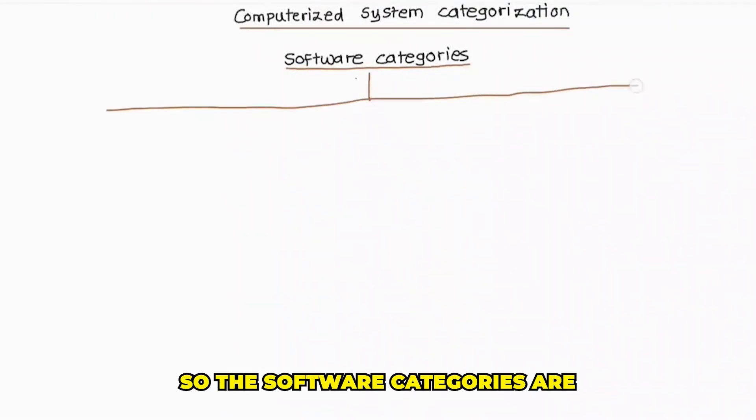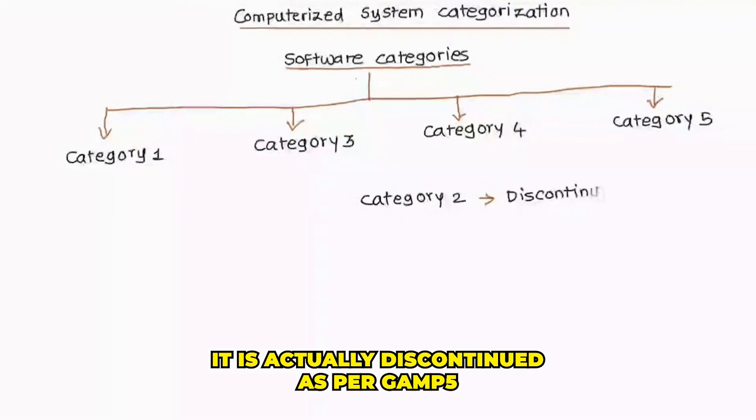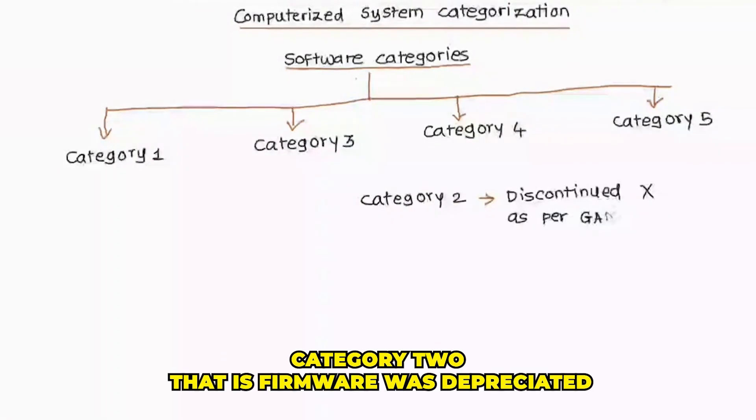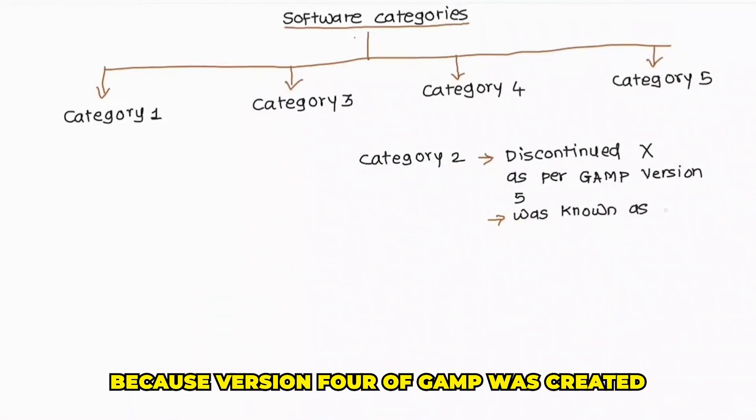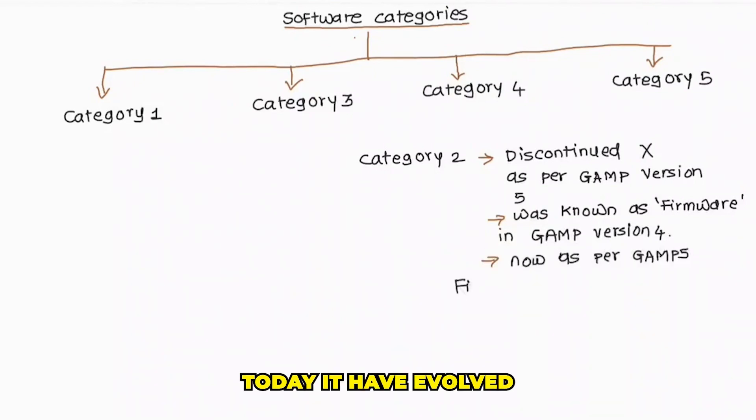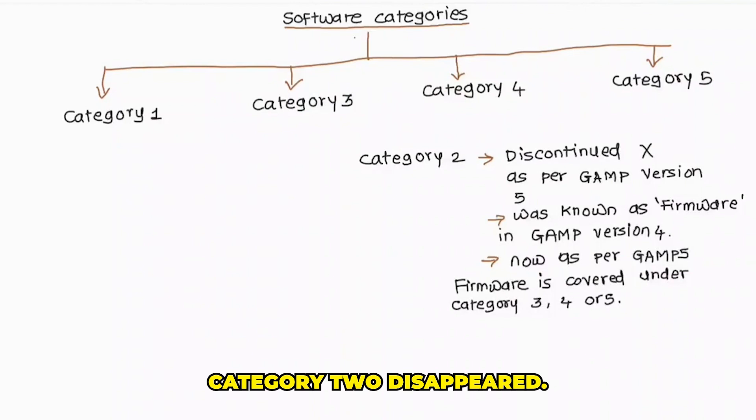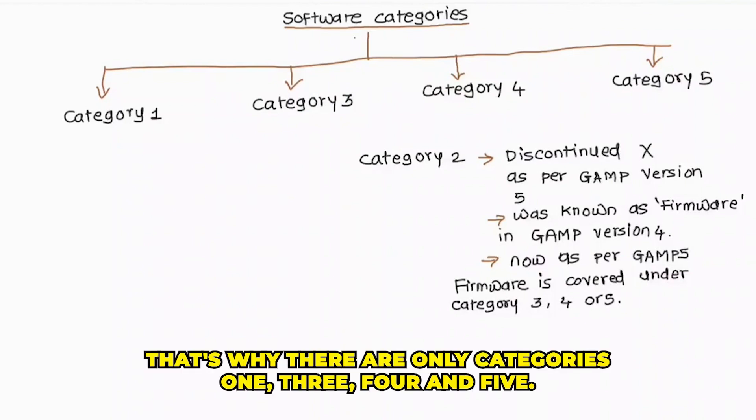The software categories are category 1, category 3, category 4, and category 5. No, I did not miss category 2. It is actually discontinued as per GAMP 5. Category 2, that is firmware, was deprecated because when version 4 of GAMP was created, the firmware differed from rest of the categories with its own characteristics. Today, it has evolved so that most firmware can be classified under category 3, 4, or 5. That's why there are only categories 1, 3, 4, and 5.